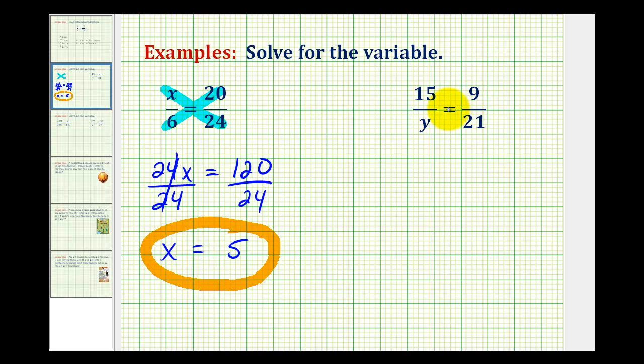On the second example, it doesn't really matter which cross product we do first, or whether we determine the product of the extremes or the product of the means first. I prefer to have the variable on the left side of the equation like we did here, so I'll determine the product of the means first, or cross multiply in this direction.